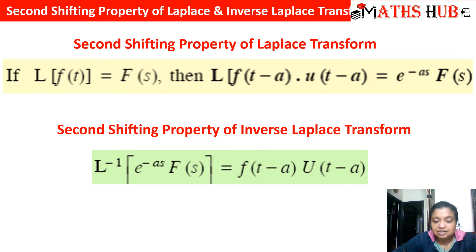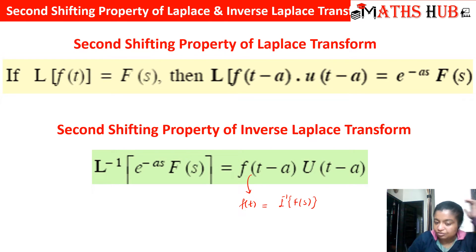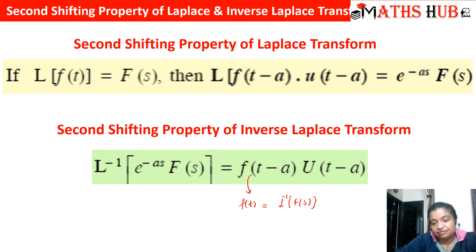Similarly, the second shifting property for inverse Laplace transform says that whenever we have inverse Laplace of a product of an exponential and a function F(s), it always turns out to be f(t minus a) multiplied by u(t minus a), where f(t) is equal to the inverse Laplace of F(s). So we have to shift t to t minus a.